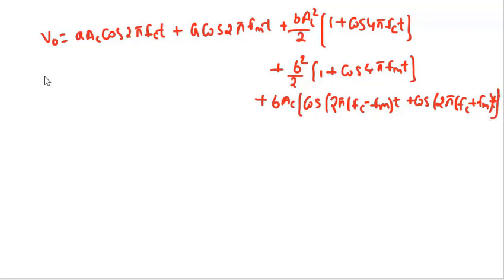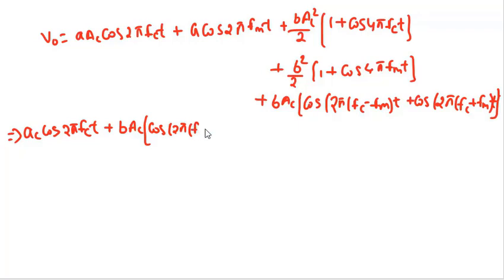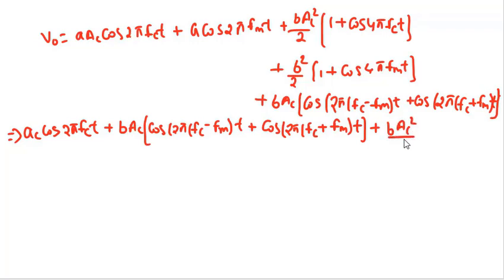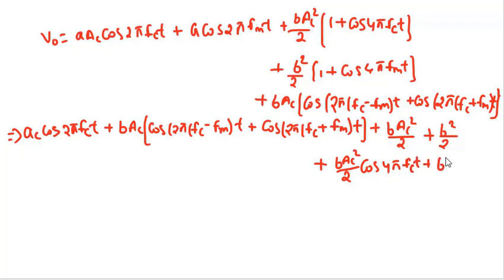Rearranging the terms, the output of the non-linear device is: A·Ac·cos(2π·fc·t) plus b·Ac·Am·[cos(2π(fc−fm)t) + cos(2π(fc+fm)t)] plus b·Ac²/2 plus b·Am²/2 (DC terms) plus b·Ac²/2·cos(4π·fc·t) plus b·Am²/2·cos(4π·fm·t).